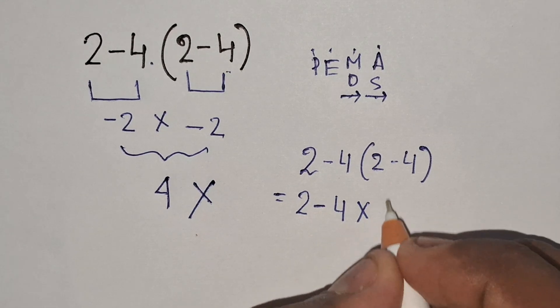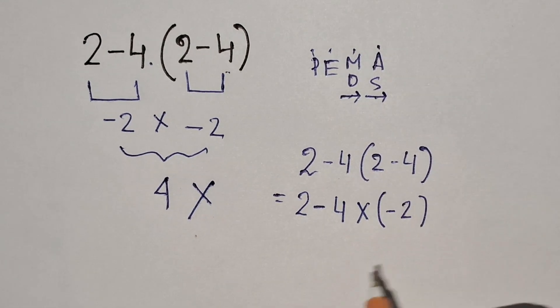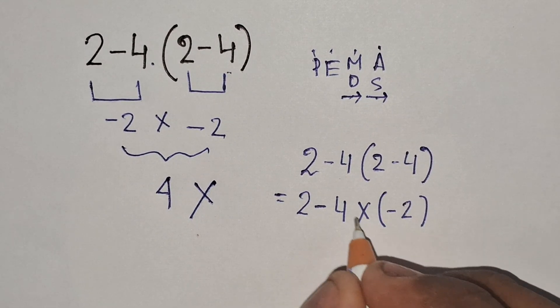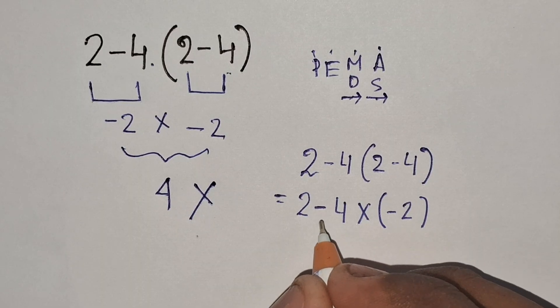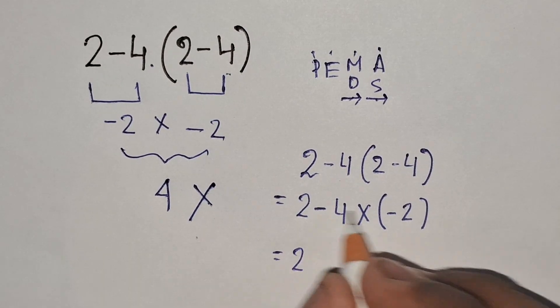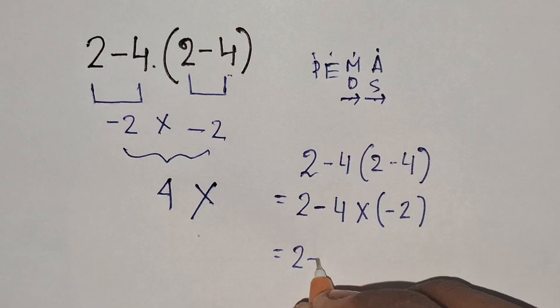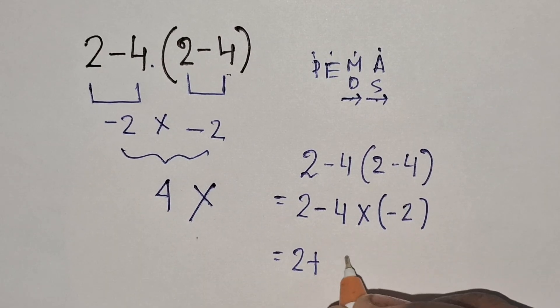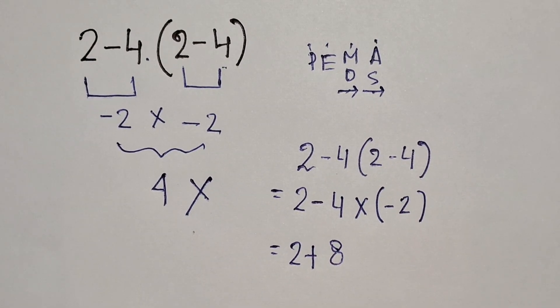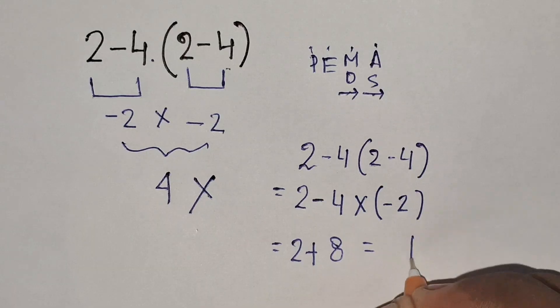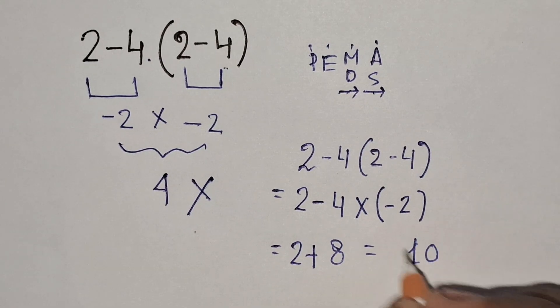The expression becomes 2 minus 4 times minus 2. Now we multiply first, then subtract. So 2 minus (minus 8), which is 2 plus 8, equals 10. The final answer for 2 minus 4(2 minus 4) is 10.